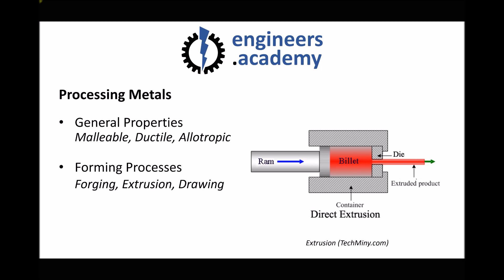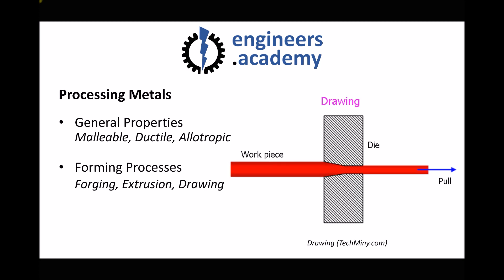We looked at another example — the process of drawing. Drawing was similar to extrusion except the material or workpiece was being pulled through the die rather than forced or pushed through the die. The material needed to be ductile in order to be drawn into a wire.